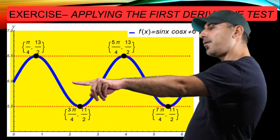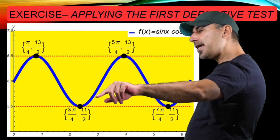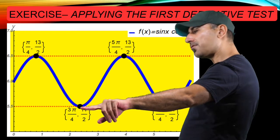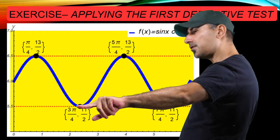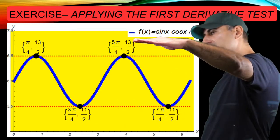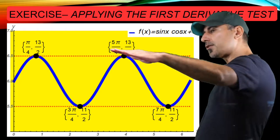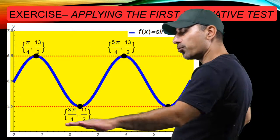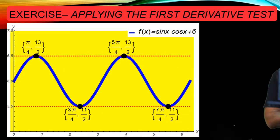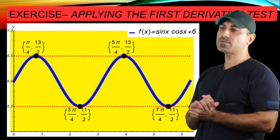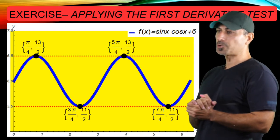And then we have decreasing behavior and increasing behavior on the right of 3 pi over 4. On the left, it's decreasing. So this should be a relative minimum. And as well, relative maximum and relative minimum. And at the junction points, as you see, we have horizontal tangent lines because the critical numbers were the numbers that were making f prime 0. So we had horizontal tangent lines at those points.